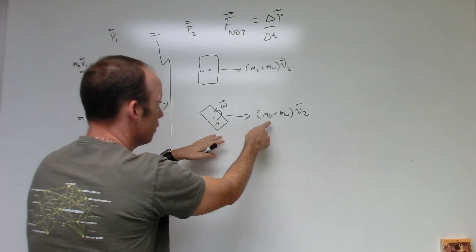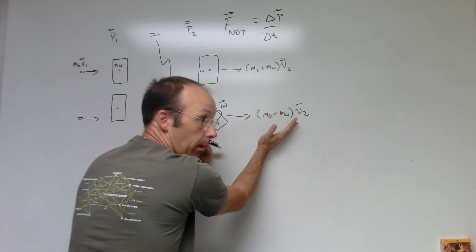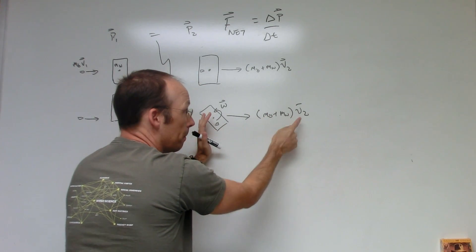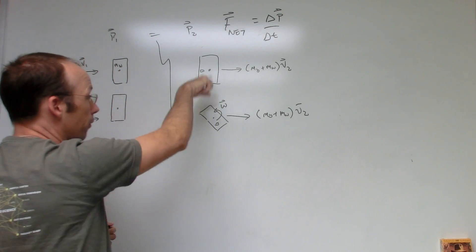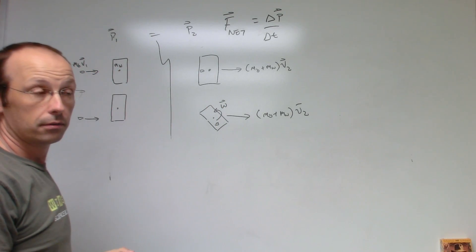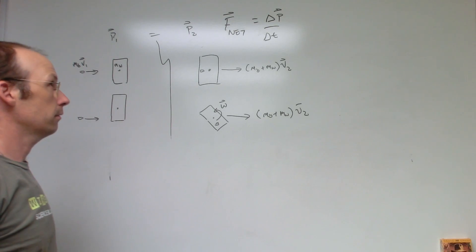So I get the bullet hits it, the final velocity is going to be the exact same thing. Same initial momentum, same final momentum. So V2 is the same whether it hits on the side or the edge. That's what the momentum principle says.